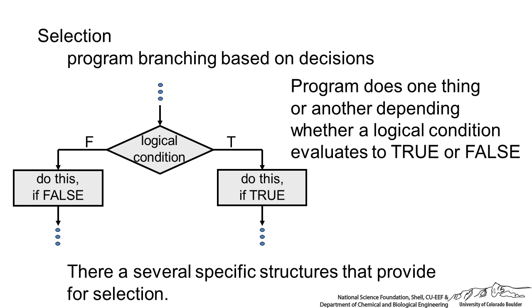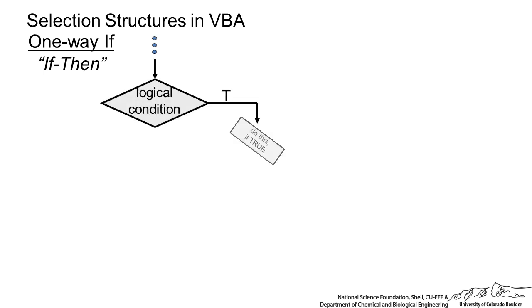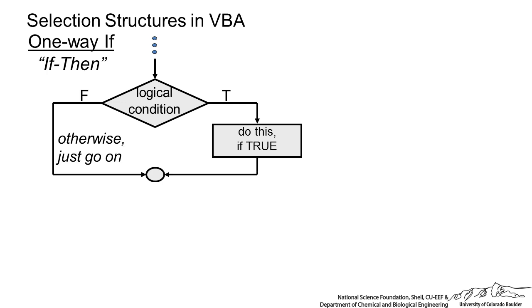There are several specific structures that provide for this. We have something known as a one-way if. This is also known as an if-then, so we come into this decision, a logical condition. If that condition is true, then we do something, and then we continue on. If it is false, then we do not do anything. We just keep going, and we keep going in our sequential flow to something else.